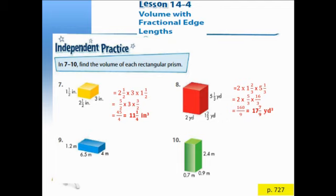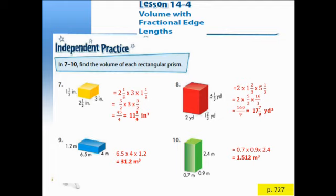For question 9, the length is 6.5, the width is 4, and the height is 1.2. After multiplying, you get 31.2 cubic meters. For question 10, the length is 0.7, the width is 0.9, and the height is 2.4. After multiplying, the result is 1.512 cubic meters.